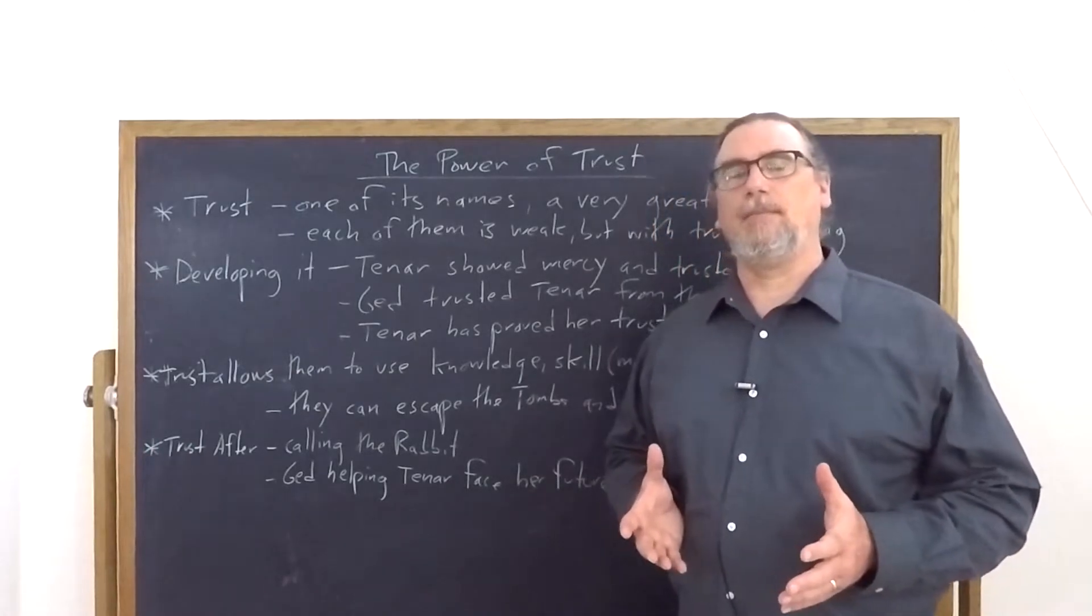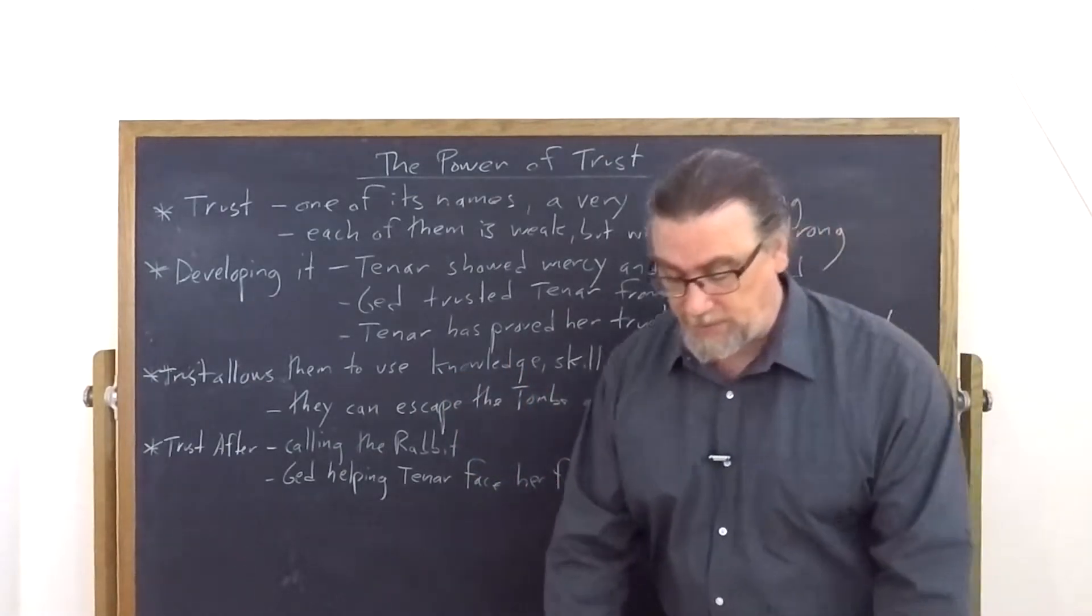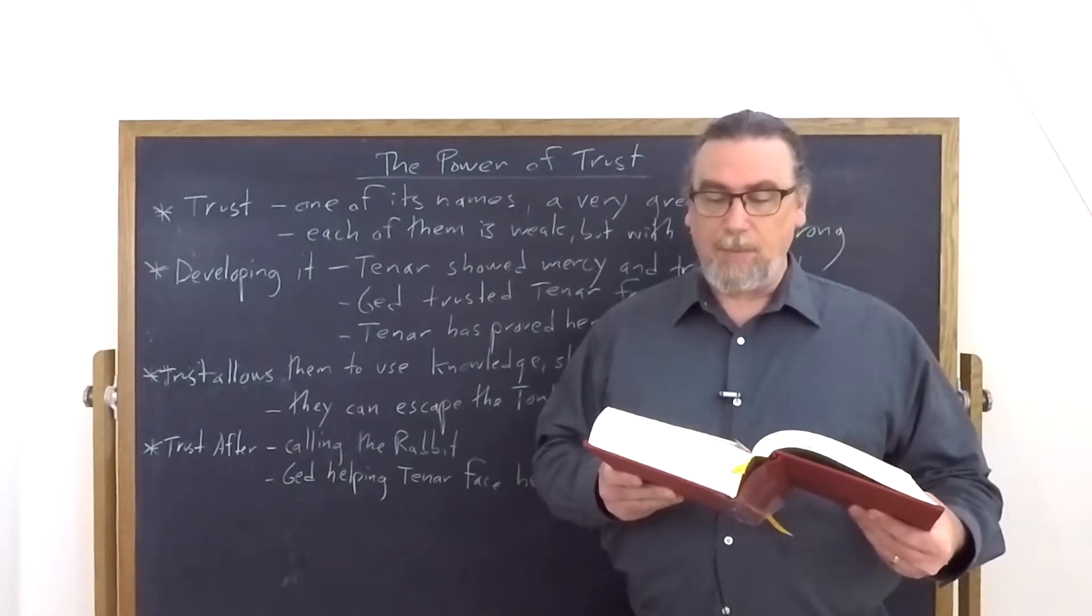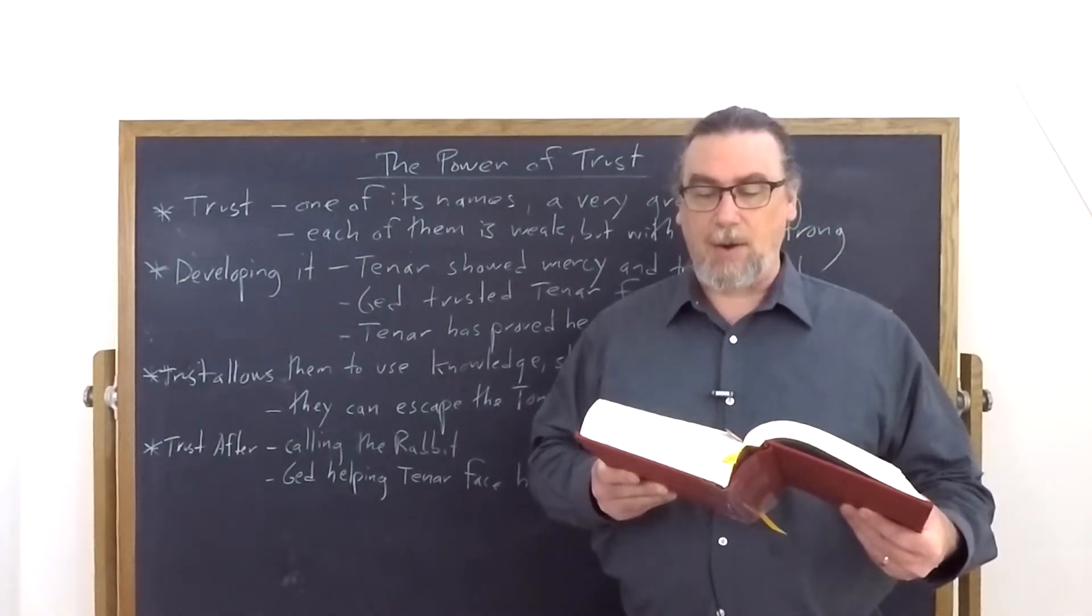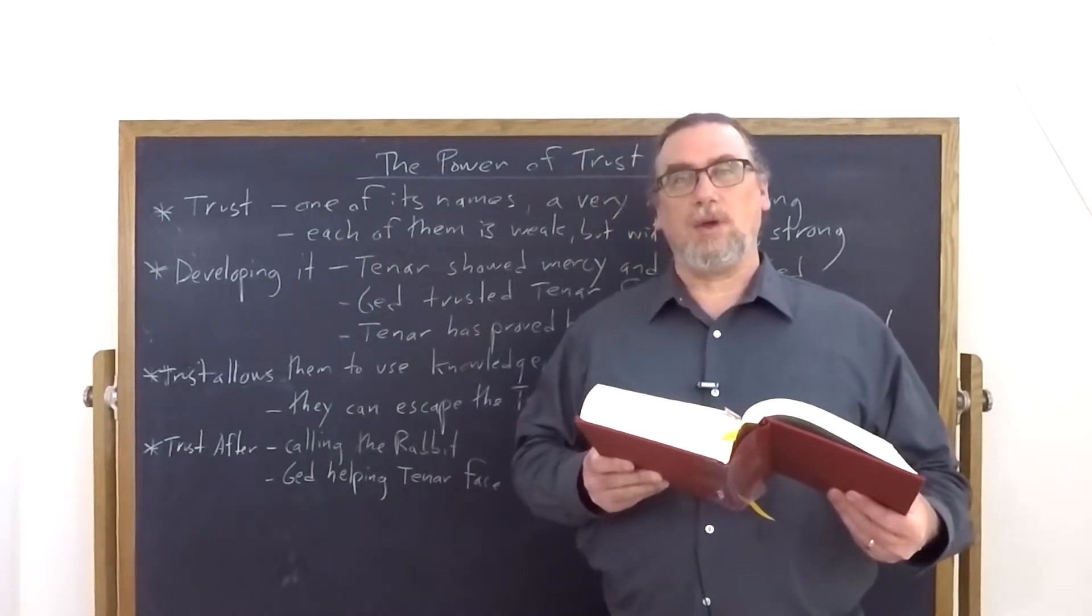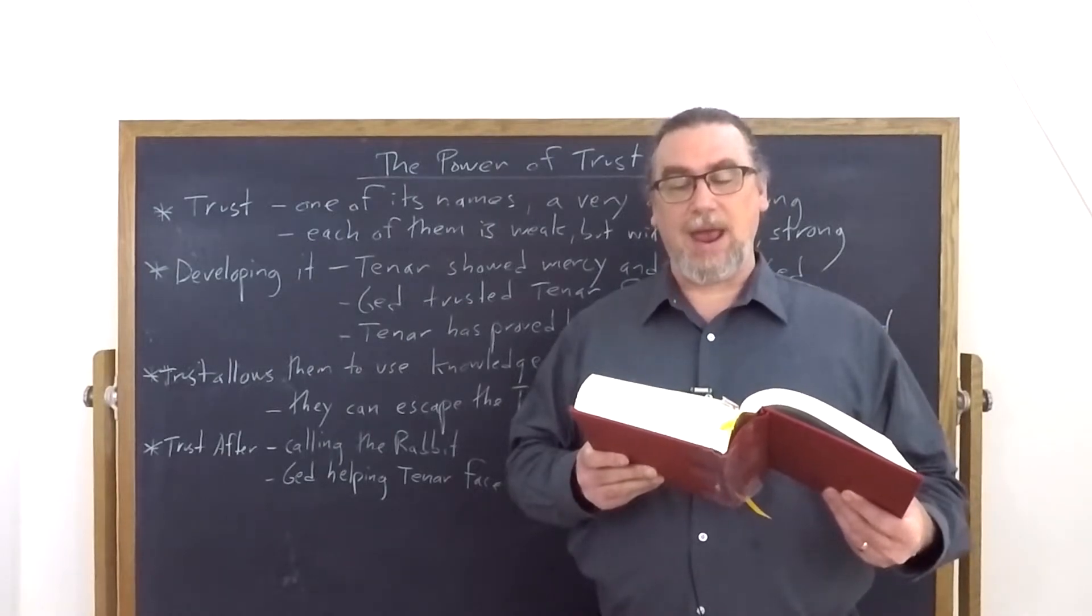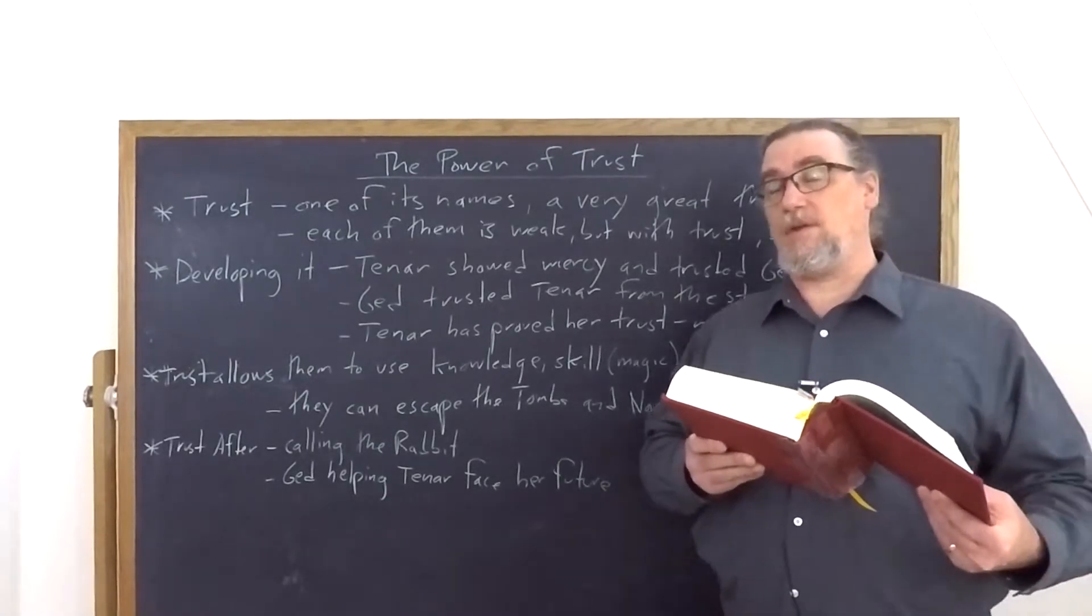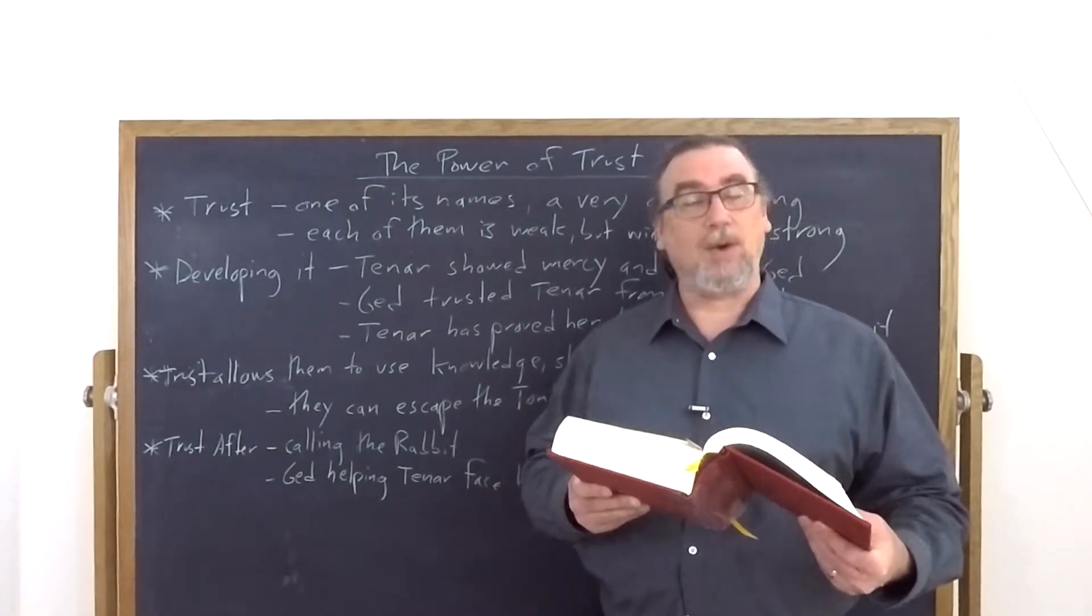So this is a very important set of points. Now, trust allows them to get themselves out of their situation. But how does it do so? Ged says, Tenar says they would not let us get out ever, the powers, the dark ones. And he says, perhaps not yet. It's worth trying. You, Tenar, have knowledge. I, Ged, have skill. And between us, we have, he paused. She brings up the third thing. We have the ring of Erith Akba, which is not yet reformed at this point in time. It's still broken. And this is where he says, yes, that. But I thought of another thing between us, call it trust.